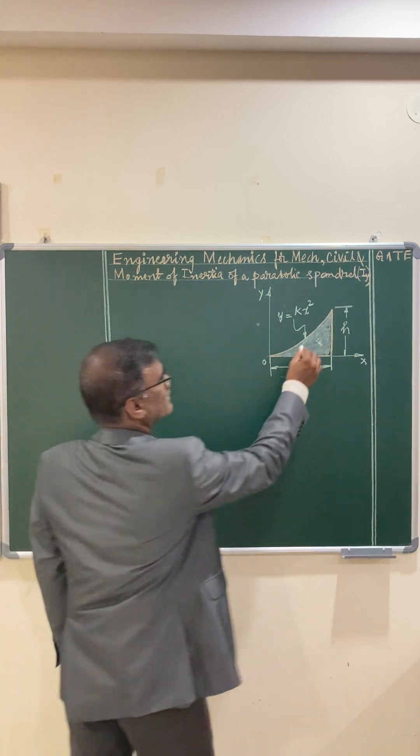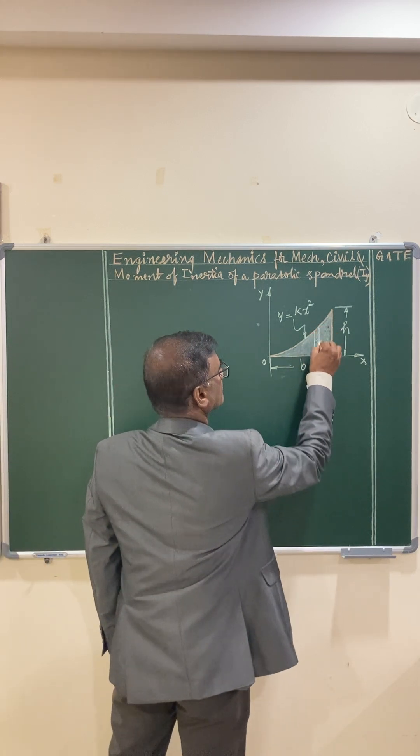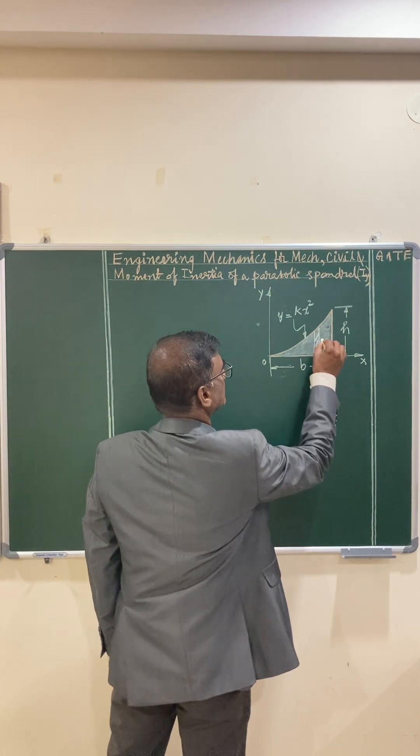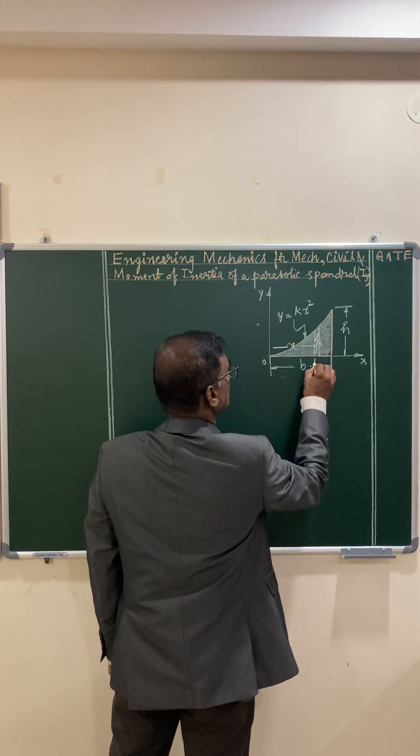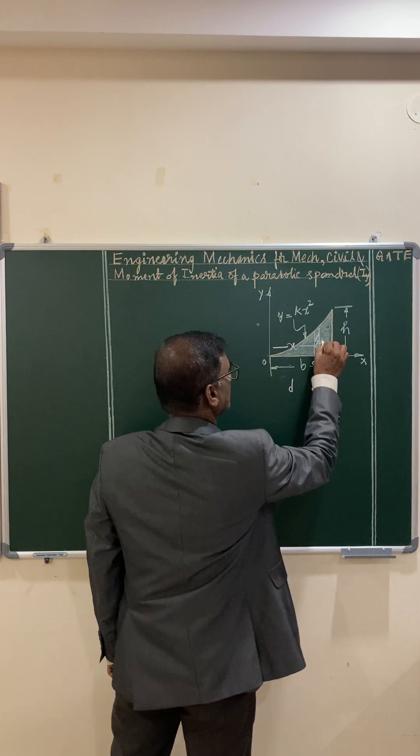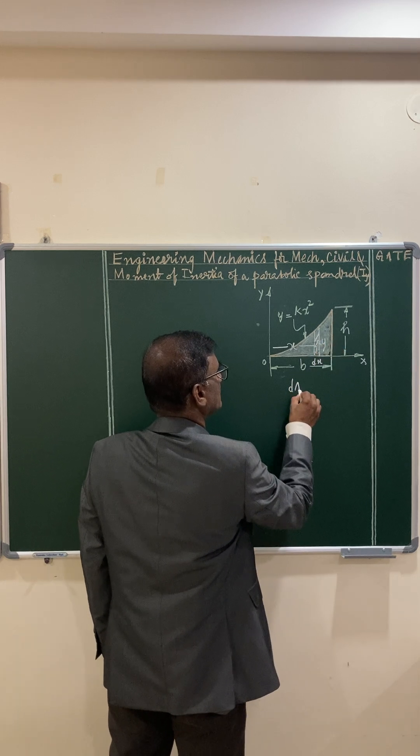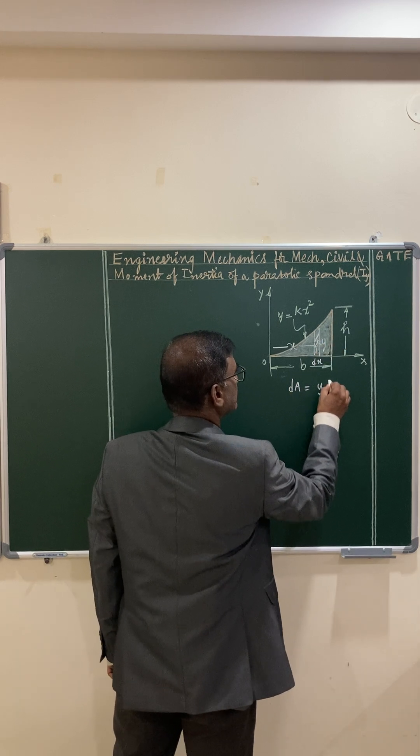Let us select an elemental area dA at a distance x from the y-axis, elemental thickness is dx. Here height of the element is y. So, elemental area dA is equal to y dx.